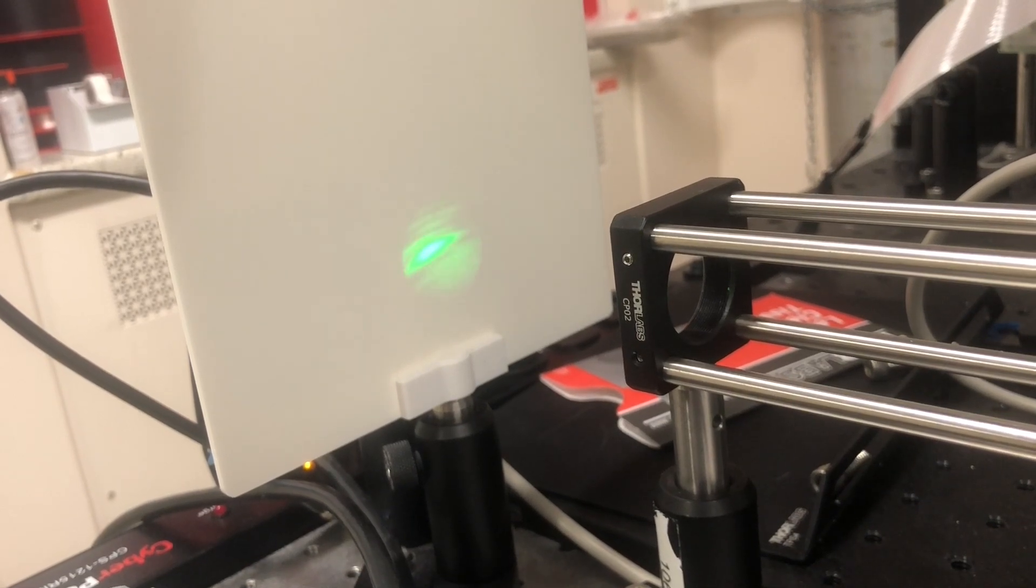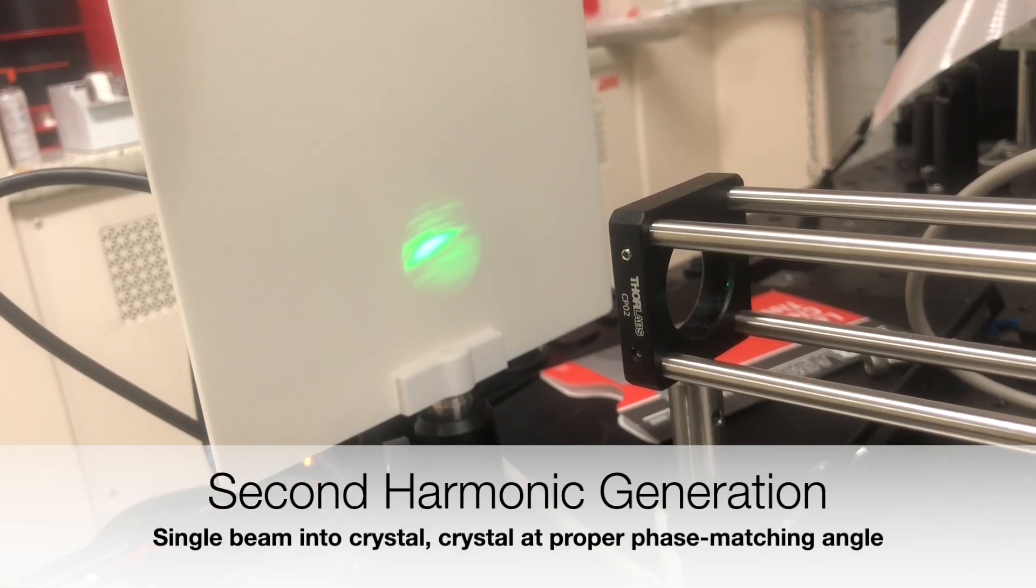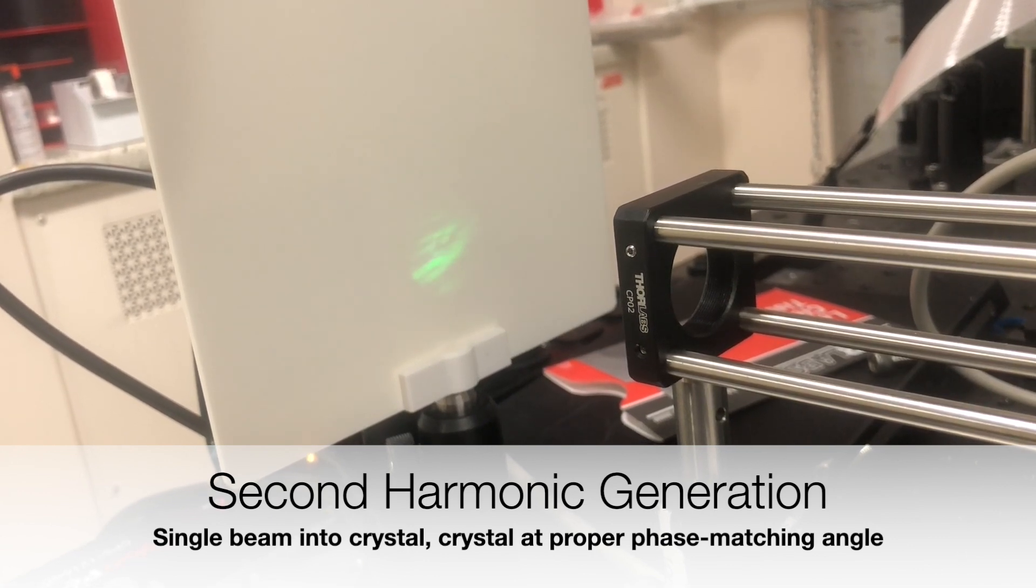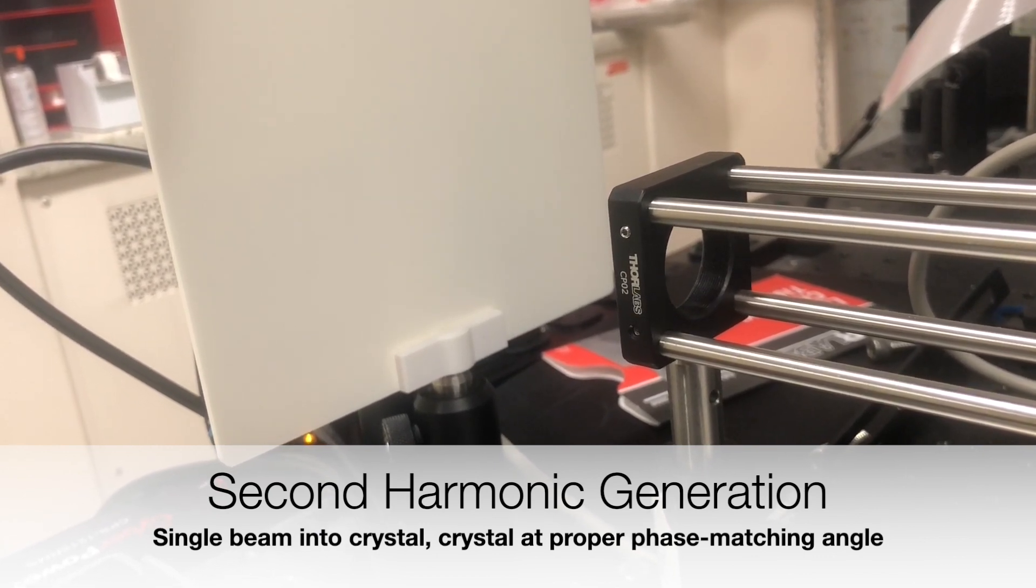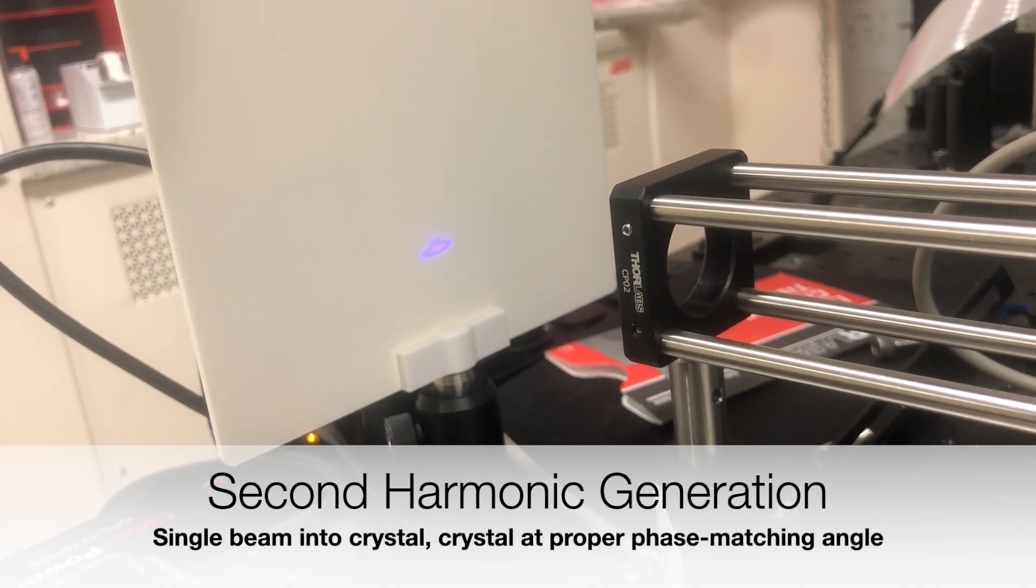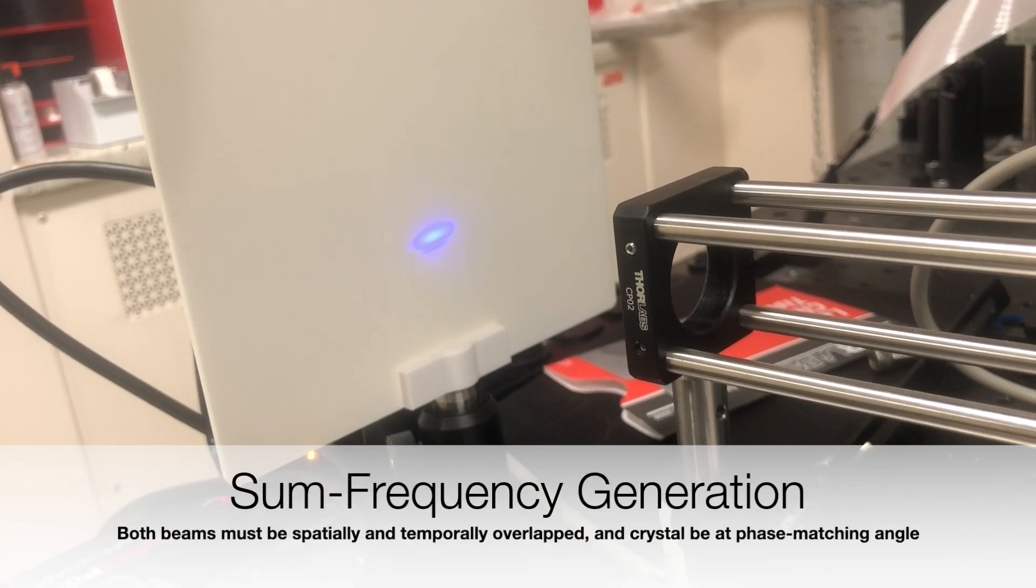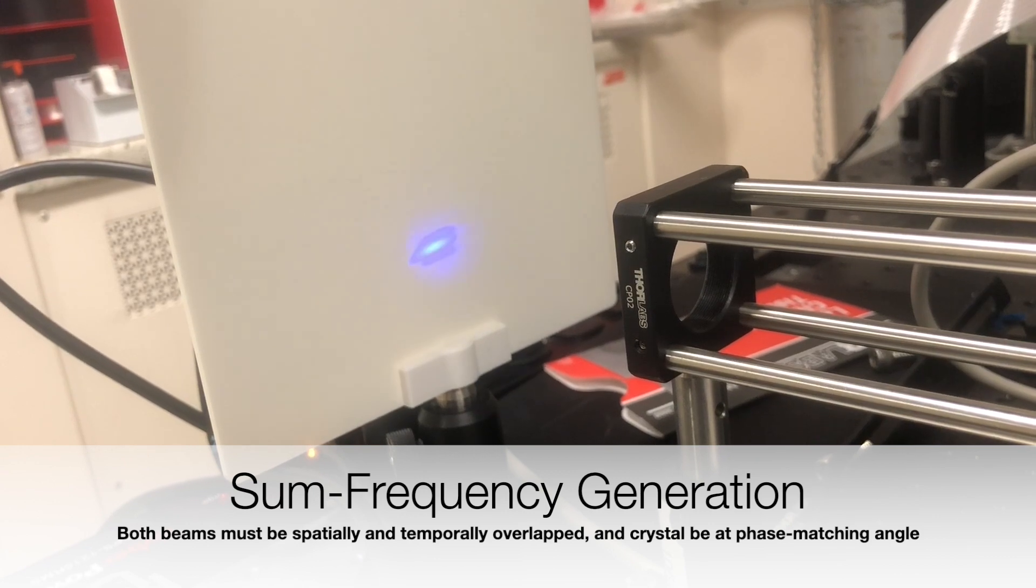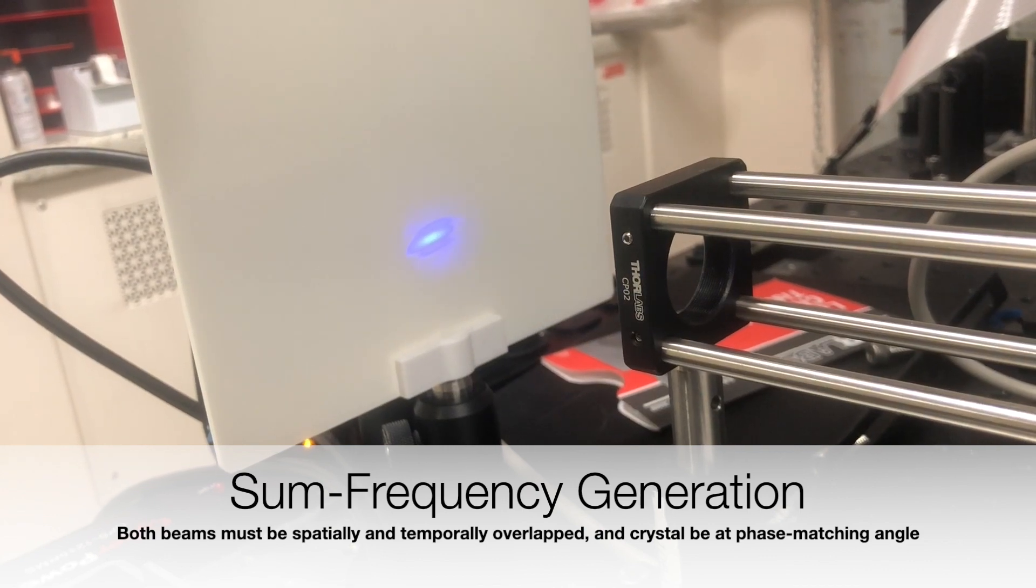So, in summary, because we have these two beams spatially and temporally overlapped in our crystal, with the right phase matching angle, we can get second harmonic generation of the 1064 beam. By changing the angle of the crystal, we can phase match for the 832 beam that will generate a 416 beam. Finally, in between, with an angle in between, we can get the phase matching for sum frequency of the 832 and 1064 beam that will give us a beam at 466. This 466 beam depends on the presence of both the 832 and the 1064.